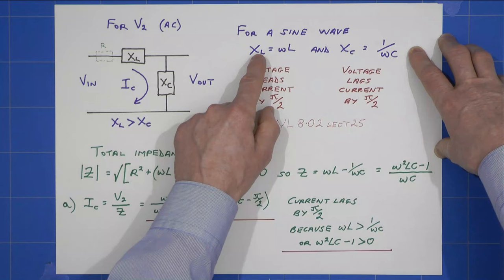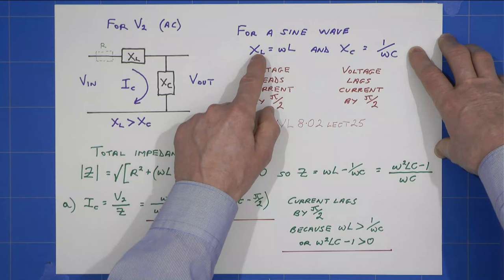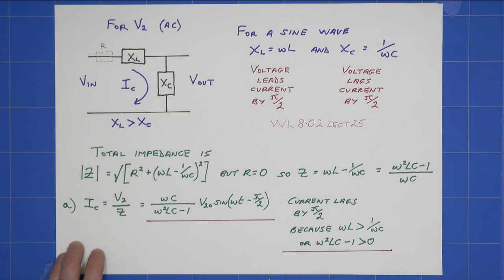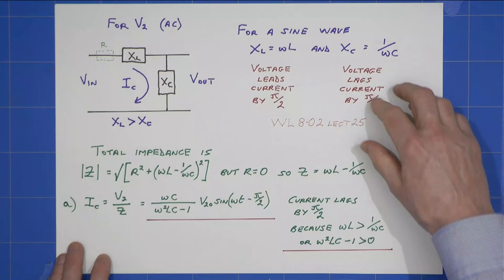And he shows that the reactance for the inductor equals omega L and for the capacitor equals 1 over omega C, and that voltage leads current by pi by 2 for the inductor and voltage lags current by pi by 2 for the capacitor.